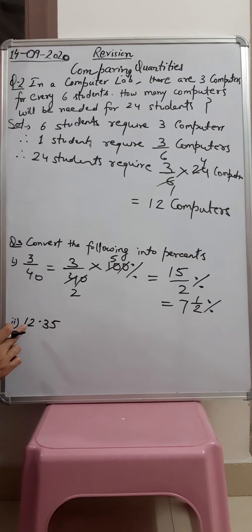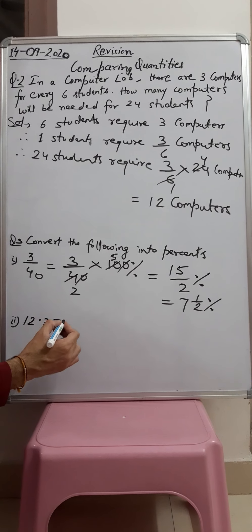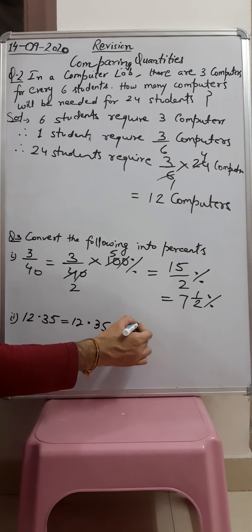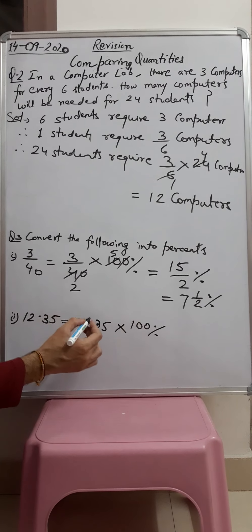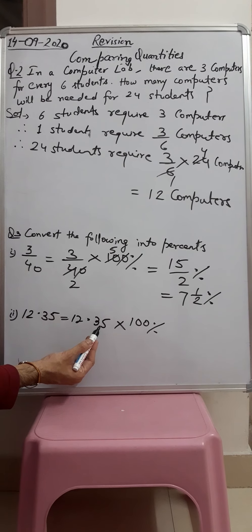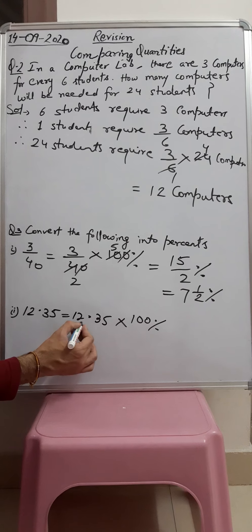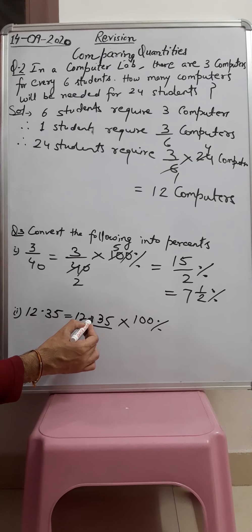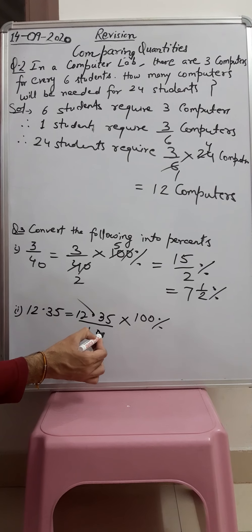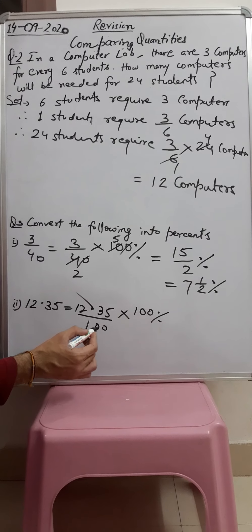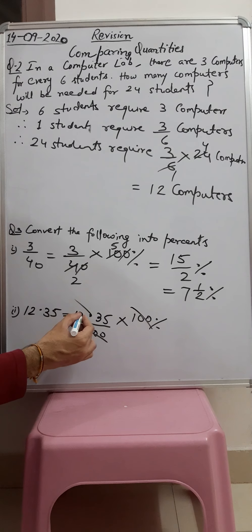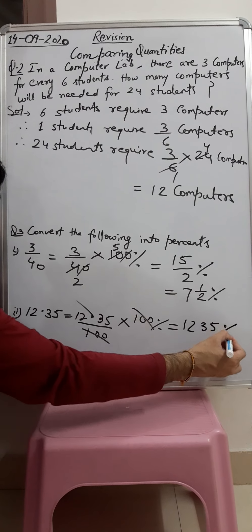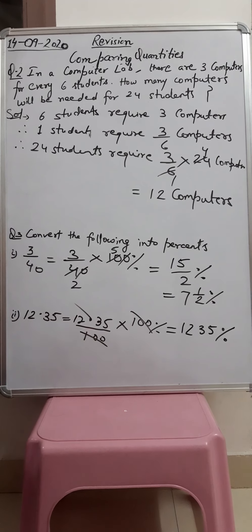Now the second part: we have a decimal number and we have to change it into percent. Again, multiply by 100%. To remove the decimal — here there are two decimal places — every number has 1 as a denominator, so we remove the decimal and add two zeros in the denominator, making it 100. This 100 cancels with the 100 from multiplying by 100%, and we get 2.135, which becomes 213.5 percent.